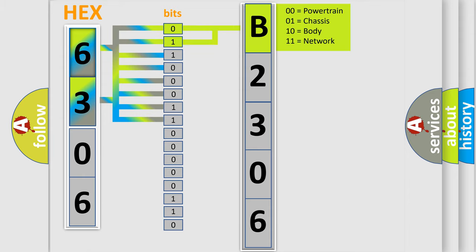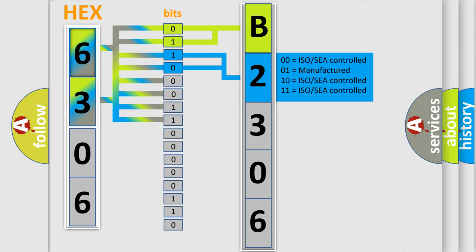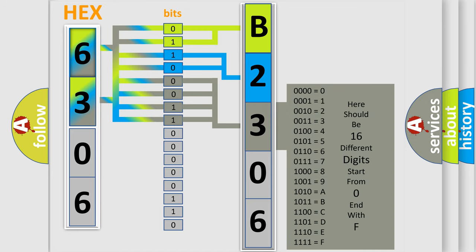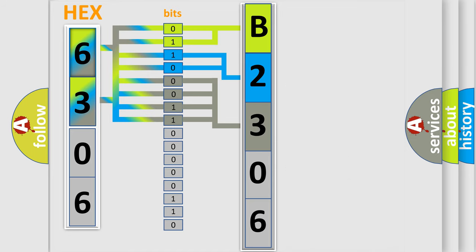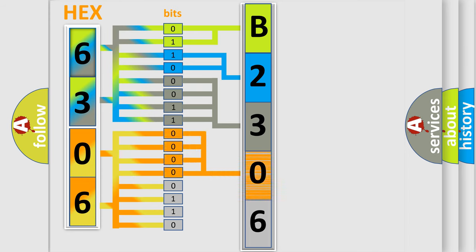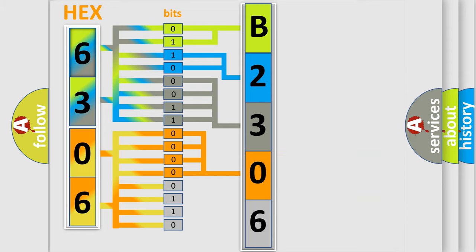The next two bits determine the second character. The last four bits of the first byte define the third character of the code. The second byte is composed of a combination of eight bits. The first four bits determine the fourth character of the code, and the combination of the last four bits defines the fifth character. A single byte conceals 256 possible combinations.